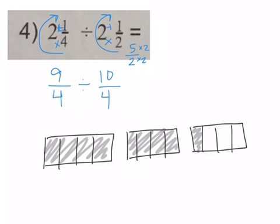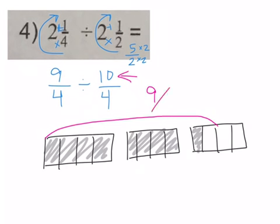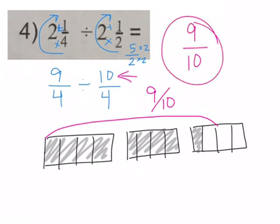We should be grouping by ten pieces: one, two, three, four, five, six, seven, eight, nine, ten — we don't have a full group. How many do we have? Nine pieces out of how many did we need? We needed ten. So our answer is nine-tenths. Now you're going to go on to level D and get some practice.